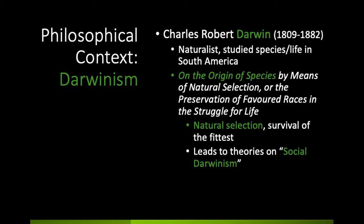Darwin theorized that organisms thrive when they propagate the features best suited to whichever environment they live in. He wrote this out in On the Origin of Species by Means of Natural Selection, or the Preservation of Favoured Races in the Struggle for Life. In this work he describes his ideas about natural selection and survival of the fittest — those with the best characteristics for survival live and are selected to reproduce, so their traits live on in future generations. It wasn't so far-fetched, as in England they had already been working with the process of artificial selection or selective breeding. Still, his ideas were met with controversy.